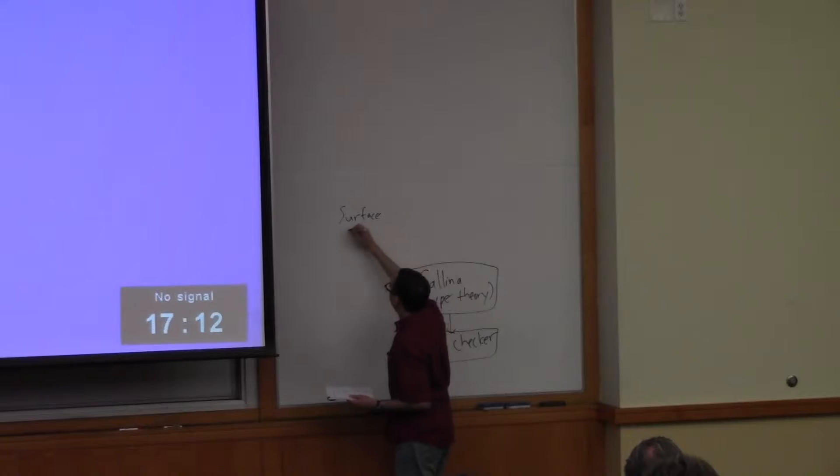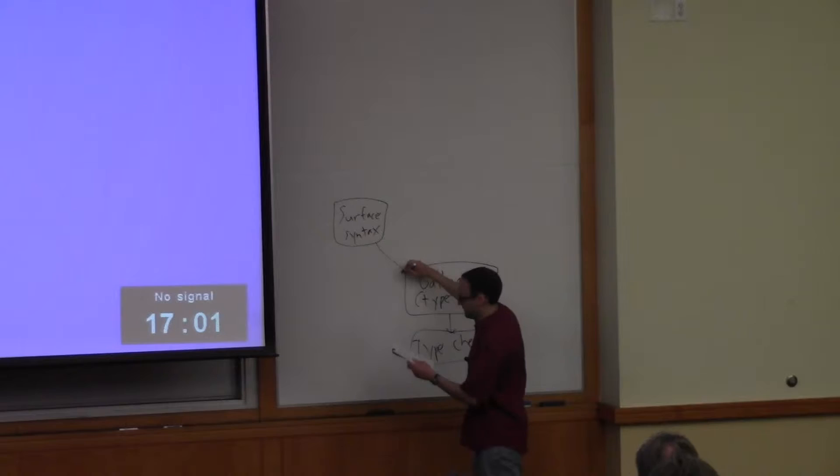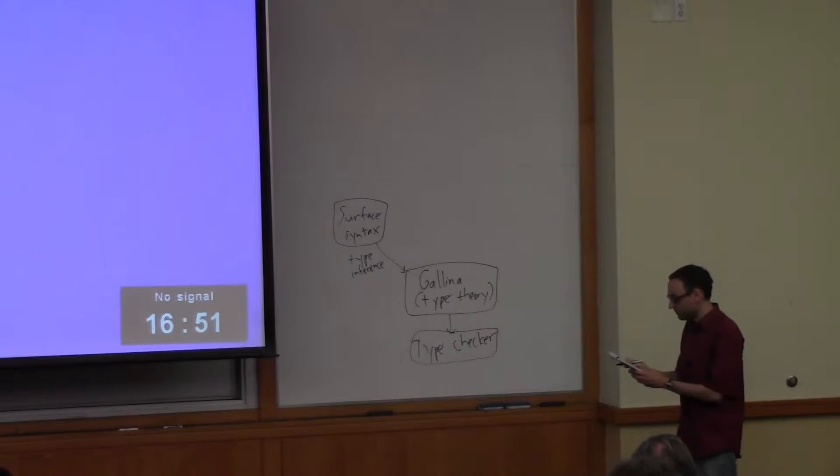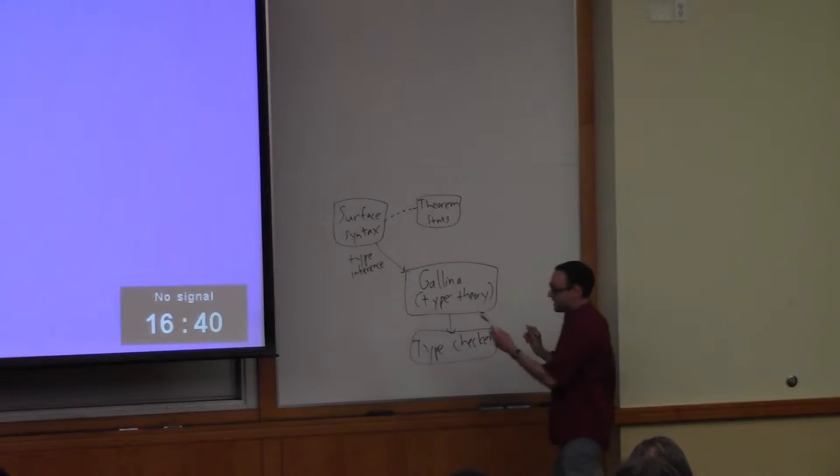And then we're going to do some programming with a convenient surface syntax that has some extra features like for instance implicit arguments along the lines of what Peter showed us that's not part of the core type theory it gets kind of desugared into the core type theory via type inference and other more basic syntax expansion kind of stuff. And so in this surface syntax we'll be able to write down what we're trying to prove. So we have some theorem statements here and then there are all sorts of different ways we can actually prove the theorem statement.